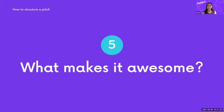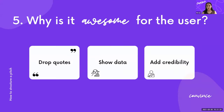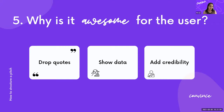Number five: what makes your solution awesome? Drop in some quotes, show some data and add credibility. This is the final part of your pitch that's really going to convince the person listening. A great way to add credibility is to do user testing, get actual quotes, and drop in percentages — like '50% of users said this app was really helpful' — to help you convince them.